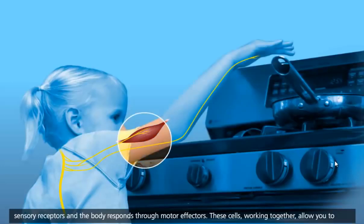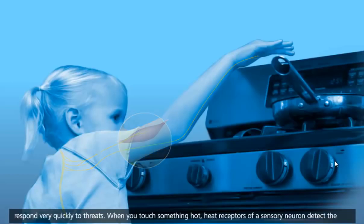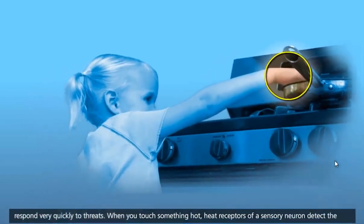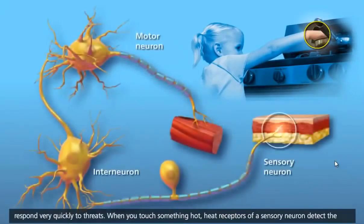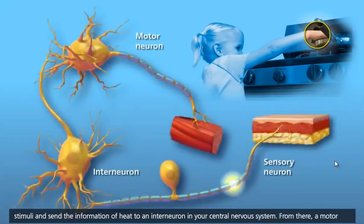These cells working together allow you to respond very quickly to threats. When you touch something hot, heat receptors of a sensory neuron detect the stimuli and send the information of heat to an interneuron in your central nervous system.